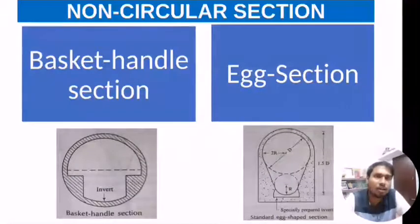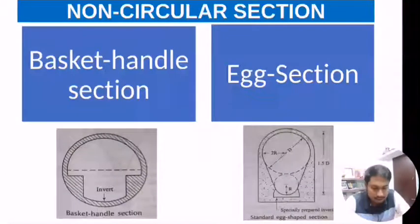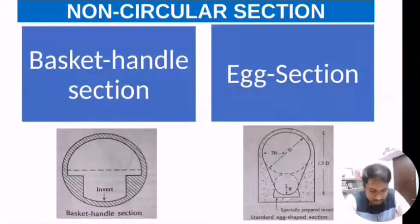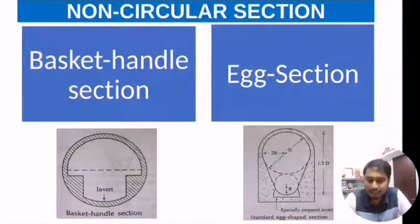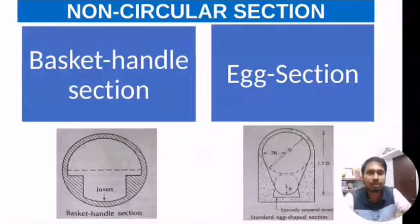The second non-circular section is the egg section, which is widely used in present days. This type of sewer is suitable for carrying combined flow. Its main advantage is that it gives a slightly higher velocity during low flow compared to the circular section, although its construction is a little more difficult.